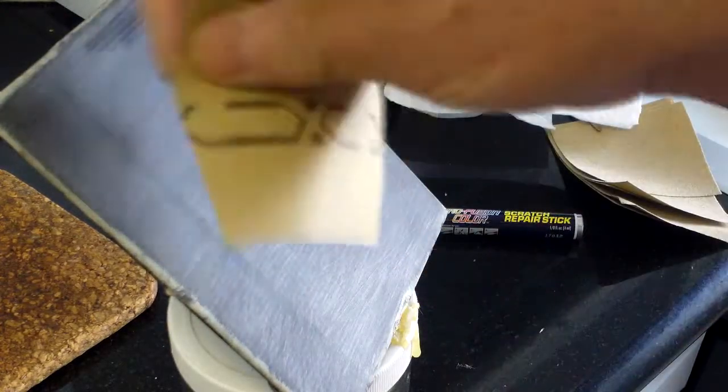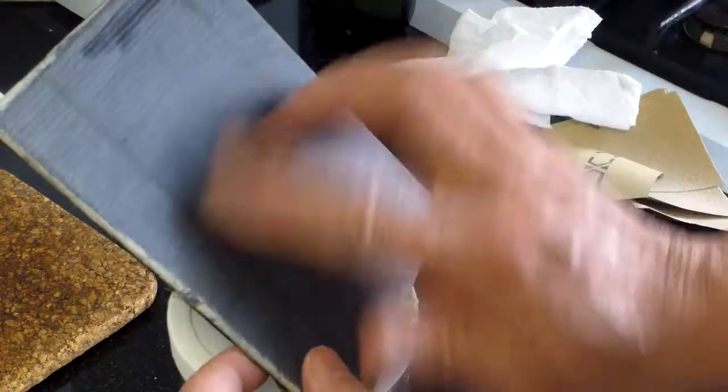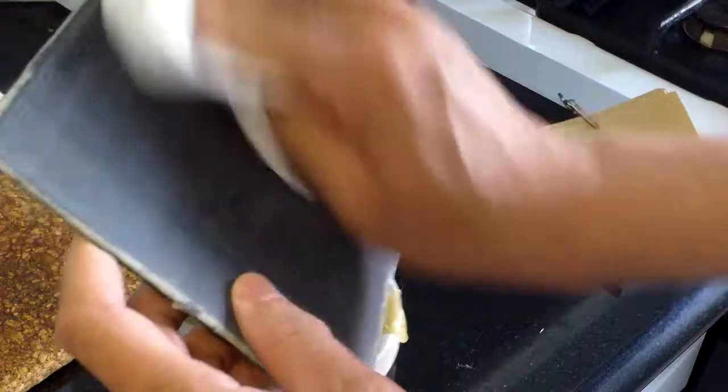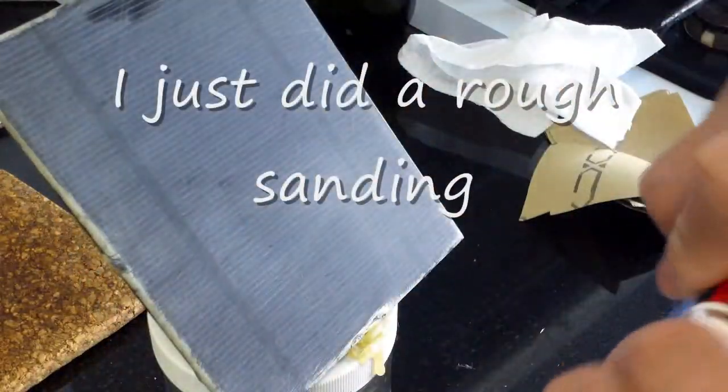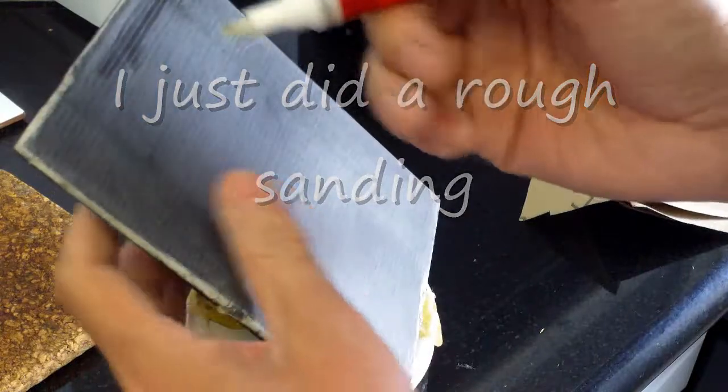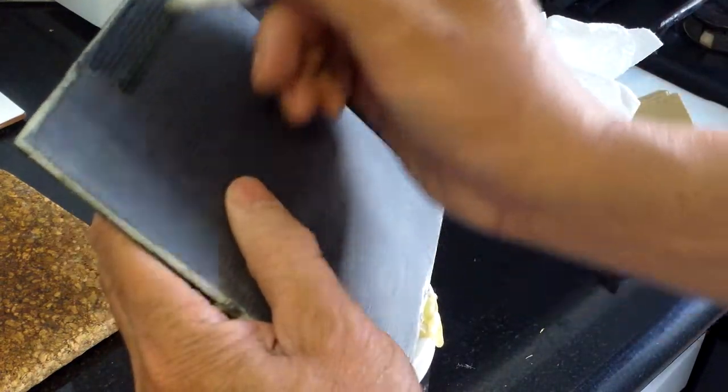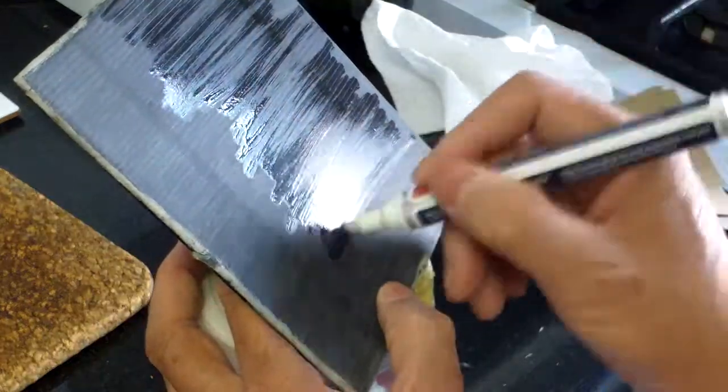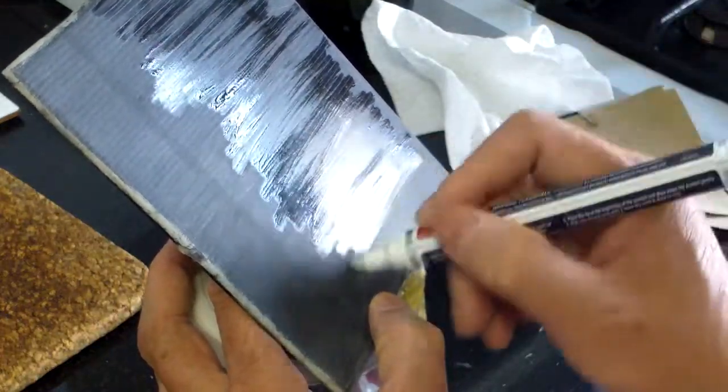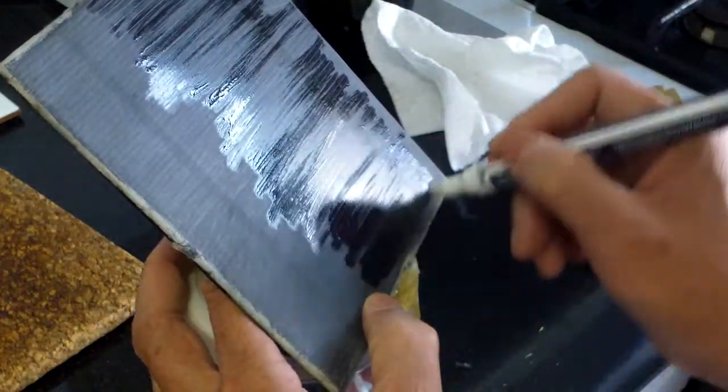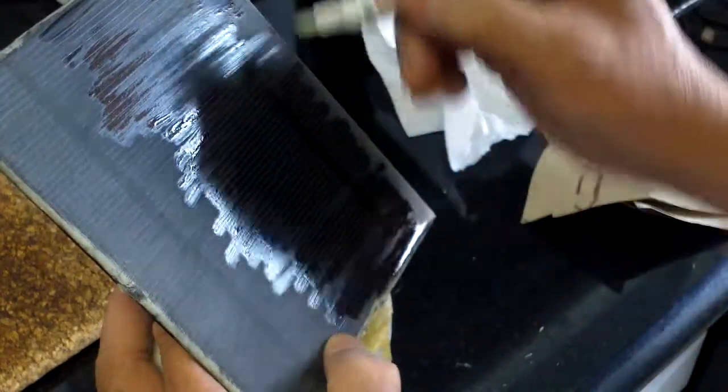I sanded the solar panel, then wiped off all the fine dust on it. Now I'm recoating it with this scratch remover. This is basically a clear coat and it's supposed to harden itself when sunlight hits it.